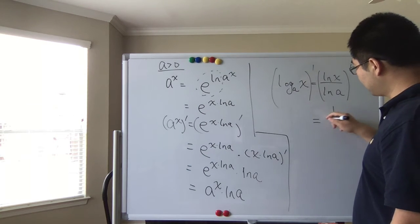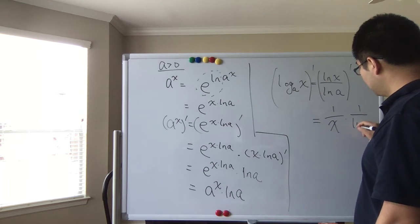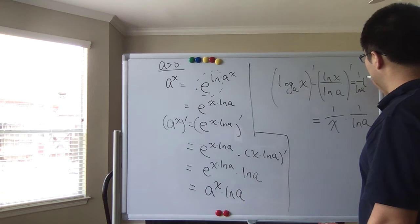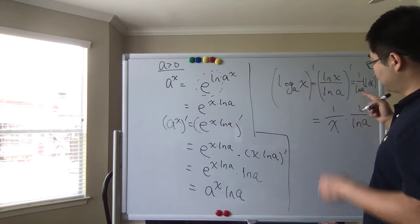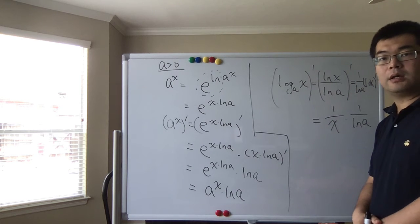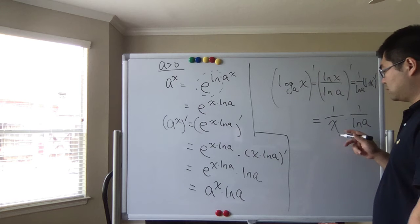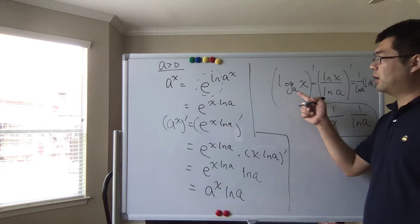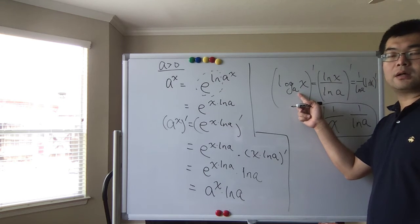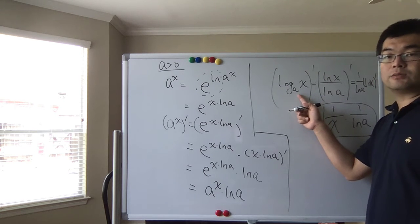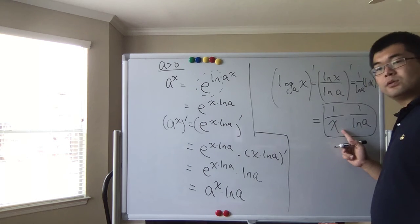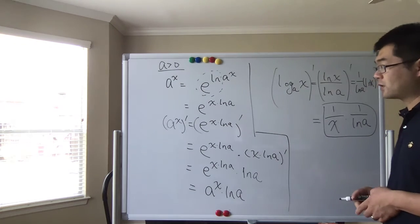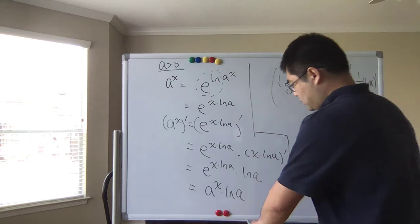So this becomes one over x times one over ln(a), since one over ln(a) is a constant we can factor out. Therefore, the derivative of log base a of x equals 1/(x · ln(a)). If you set a equal to e, you get ln(x), and one over ln(e) equals one, so the derivative is one over x — which we already know.